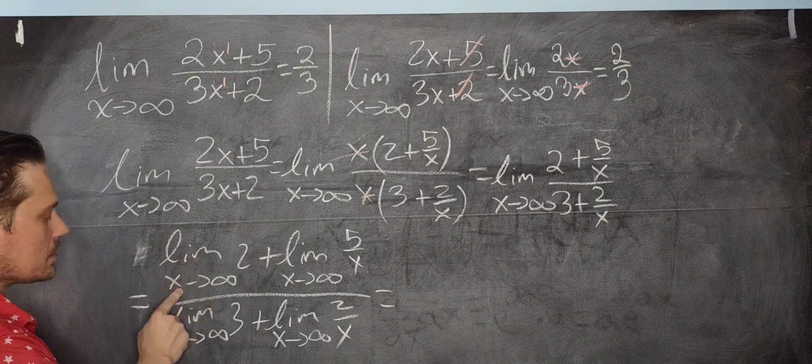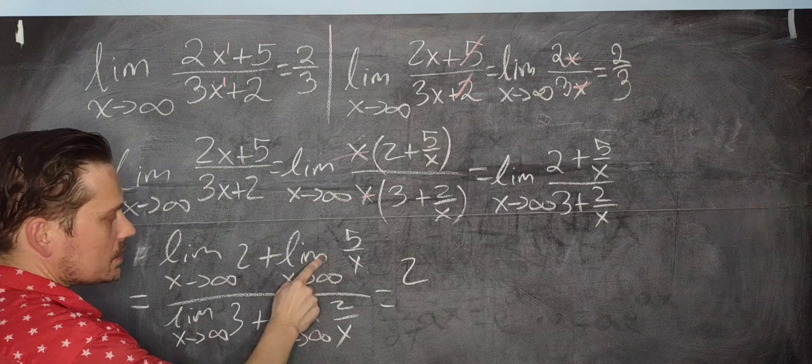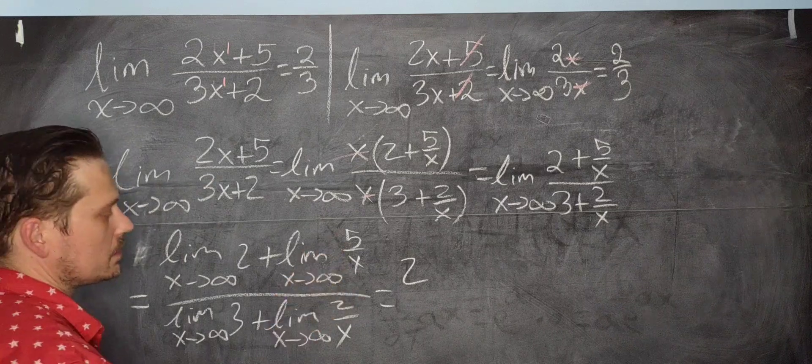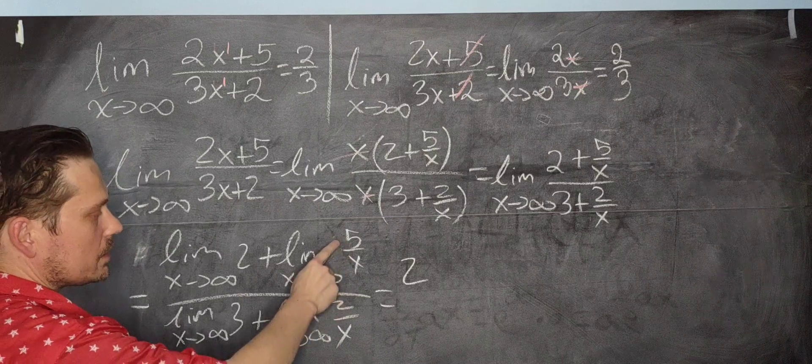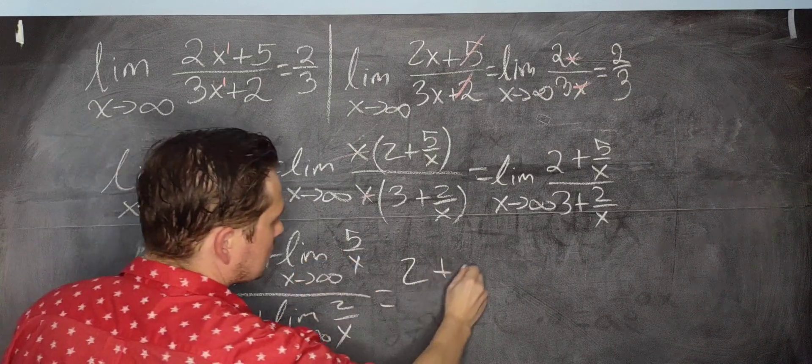So the limit as x approaches positive infinity of 2 is 2. It's a constant, it's 2. This limit, when x goes to infinity, 5 over x goes to 0, right? Because it's like 5 over a million or 5 over 10 million, 5 over a trillion. It basically becomes 0 in the limit.